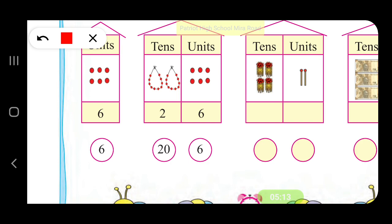There are 4 tens, so we write 4 in the tens place. There are 2 sticks in the units place, so we write 2. So the place value of 4 is 40, and the place value of 2 is 2.